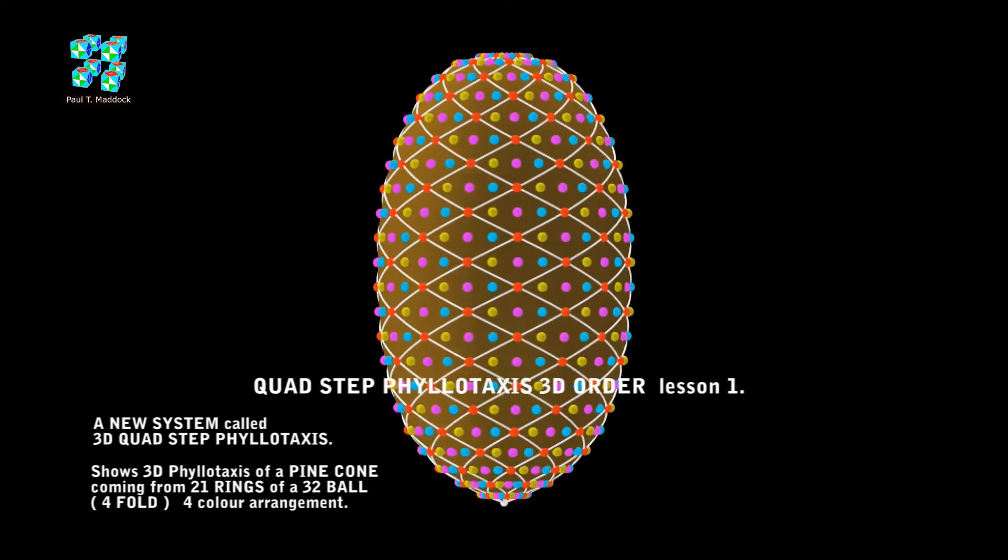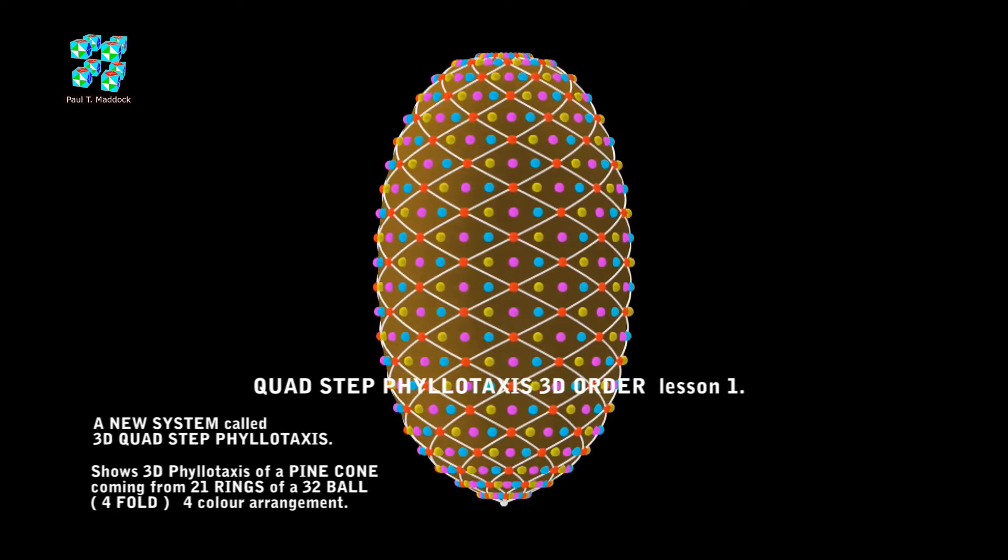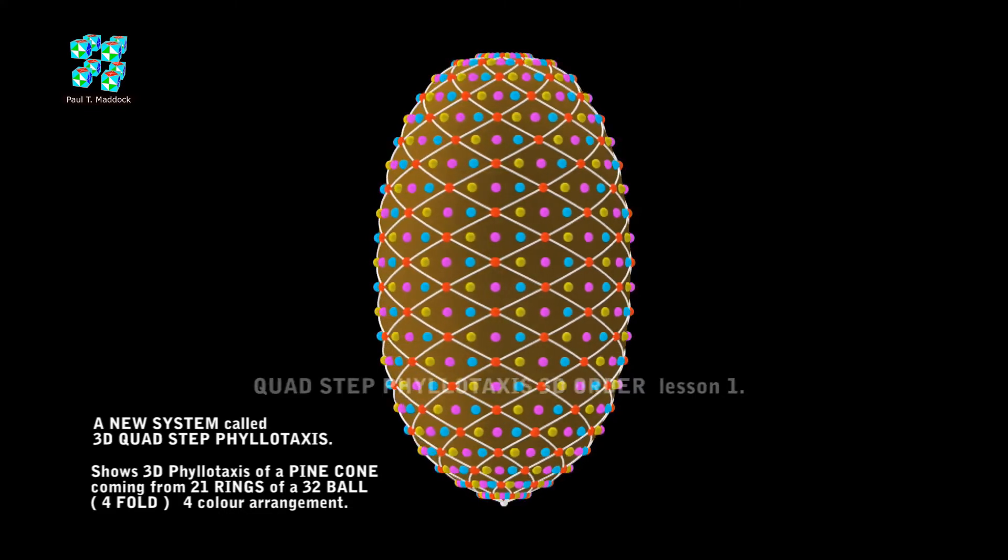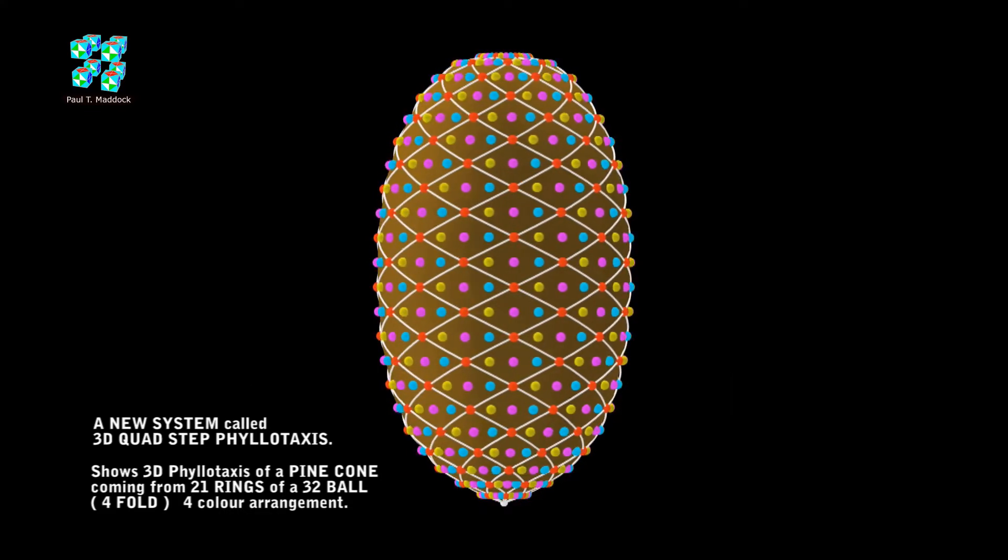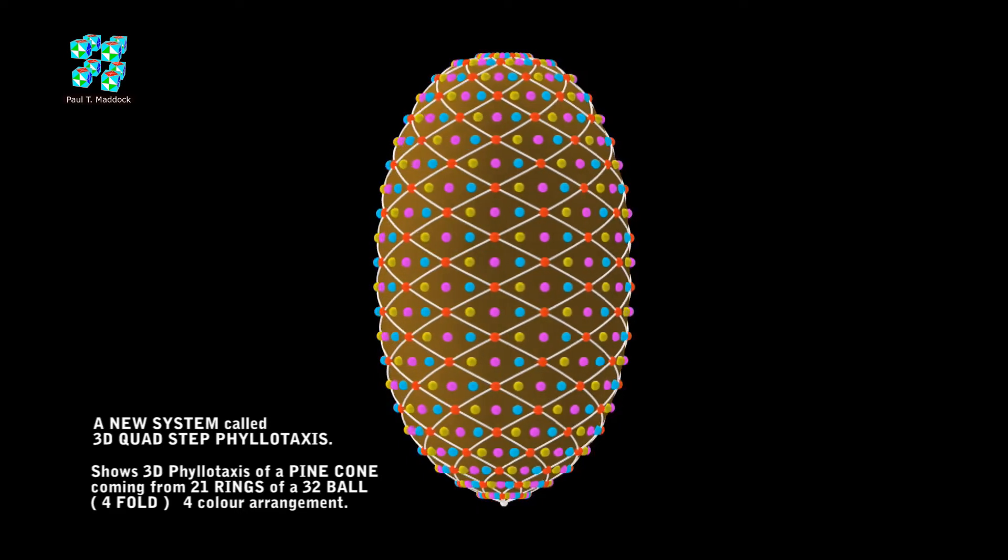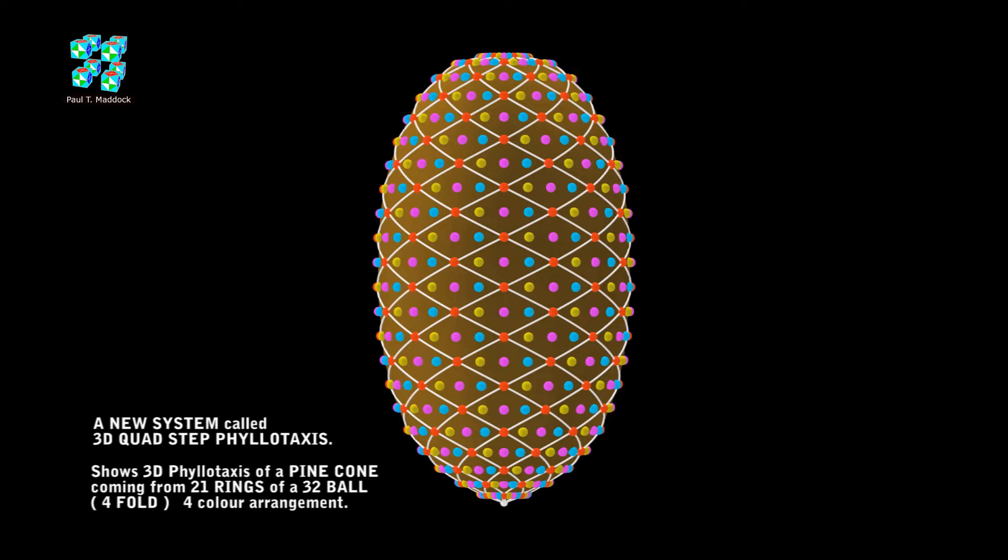In front I'm showing you a pine cone with 21 rings, which is a Fibonacci number, and I show 32 balls on each of these rings. Now the color sequence of these balls are staggered as I show in the video. Now I decided to call this system Quad Step 3D Phyllotaxis. Four color balls can go around eight times around a 32 point ring.